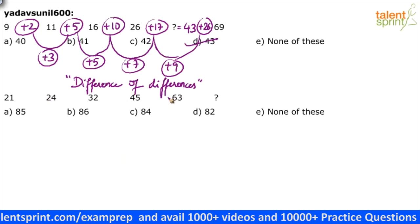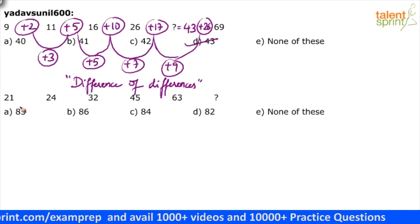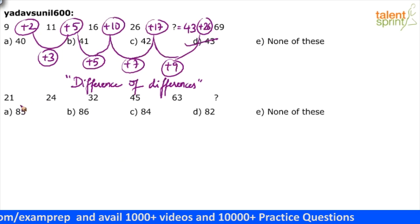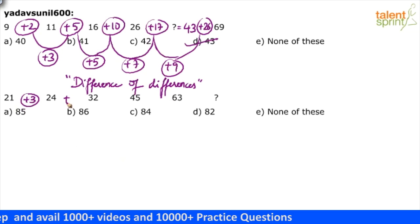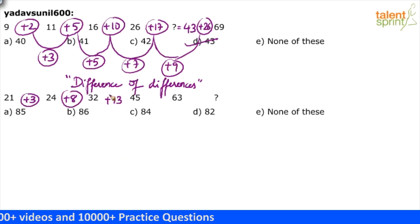21, 24, 32, 45, 63 question mark. What is this now? Plus 3 plus 8. Both look like difference of differences. This is plus 13 plus 18. So 3, 8, 13, 18. Looks like it should be 23. But anyway, let us get a solid reason. I think difference of differences.